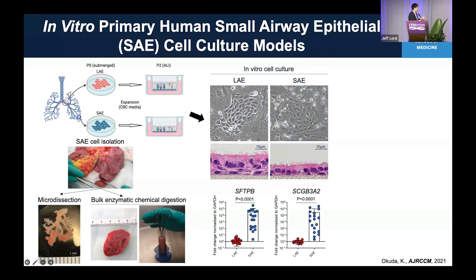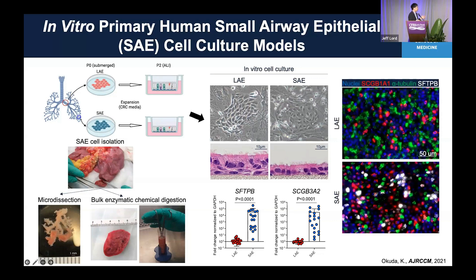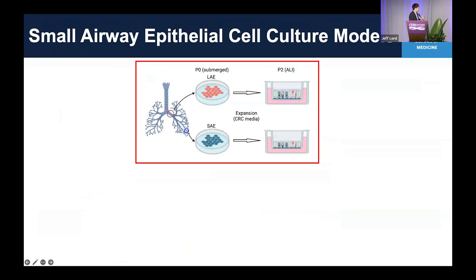An interesting feature is that small airway cell cultures express SFTPB and SCGB3A2, which are unique markers in small airways identified in vivo in human lungs. Our in vitro model really nicely mimics the in vivo large-small difference. We have now established large and small airway cell cultures.